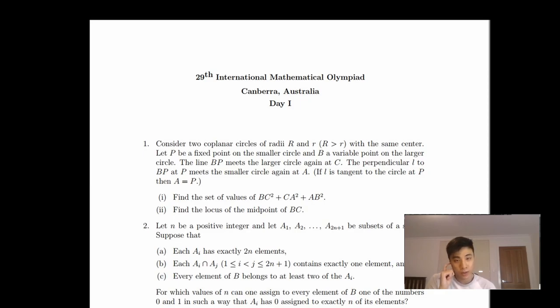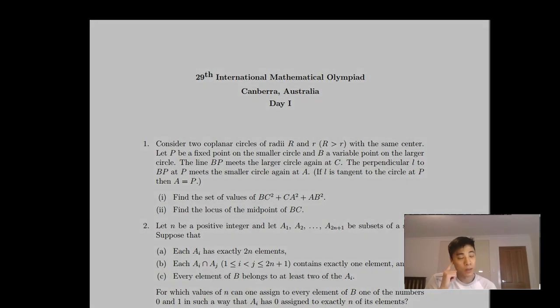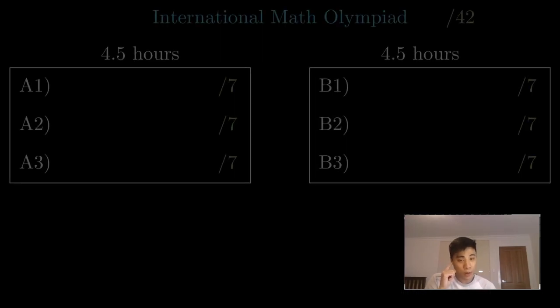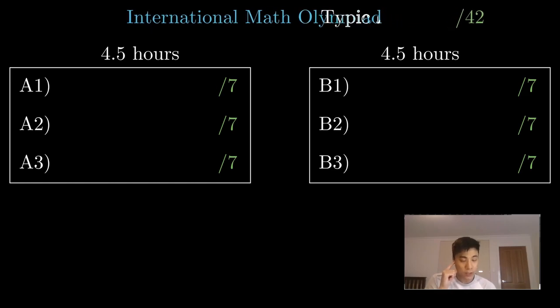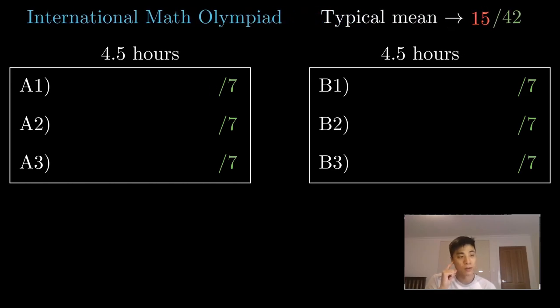...and hence are amazingly proficient mathematicians, the median score for this exam per question tends to only be around one or two. And overall, historically, the mean score of these top 600 competitors—because on average recently about a hundred nations compete each year—historically as a cohort, the mean score out of 42 has only been around 15 or so.